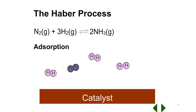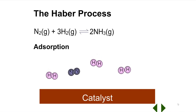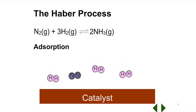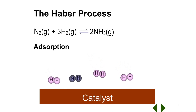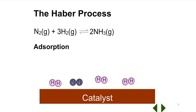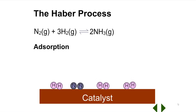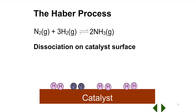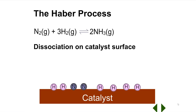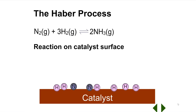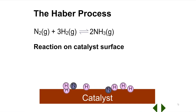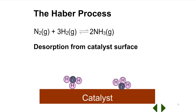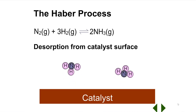During the Haber process, hydrogen, H2, and nitrogen, N2, are the reactants. Three molecules of hydrogen are needed to react with every one molecule of nitrogen. The reactant molecules are adsorbed onto the catalyst surface — this means that they bind to the catalyst surface. The reactant molecules then dissociate; the intramolecular forces, or bonds, between the atoms break, and the individual atoms move apart from one another. They are now free to bond in a different arrangement to form the product, ammonia, NH3. Two molecules of ammonia are formed for every molecule of N2 that reacts. The ammonia molecules are then released — desorbed — from the catalyst surface.